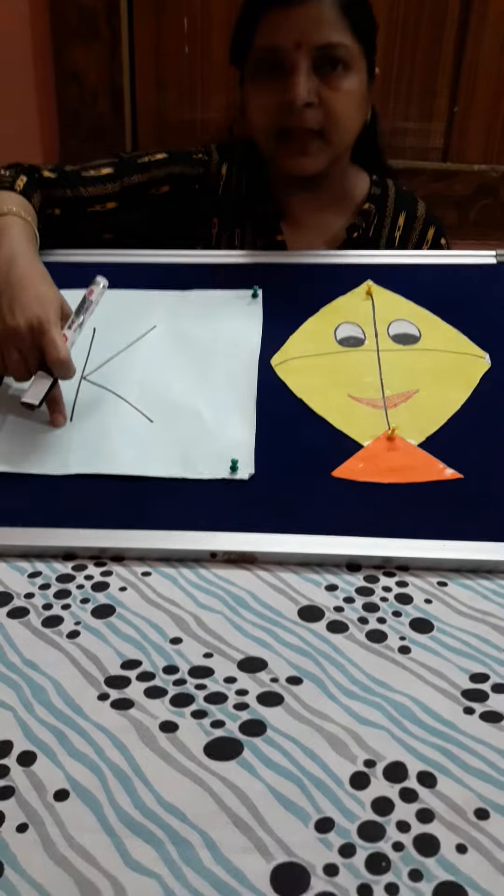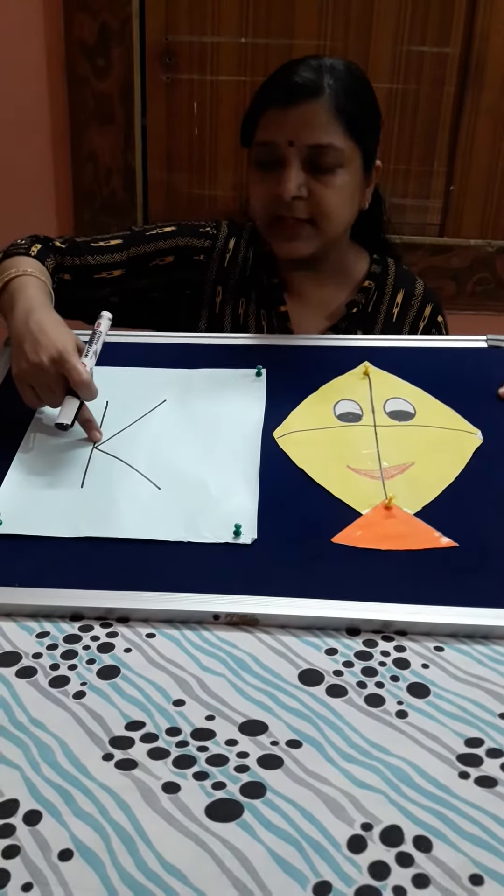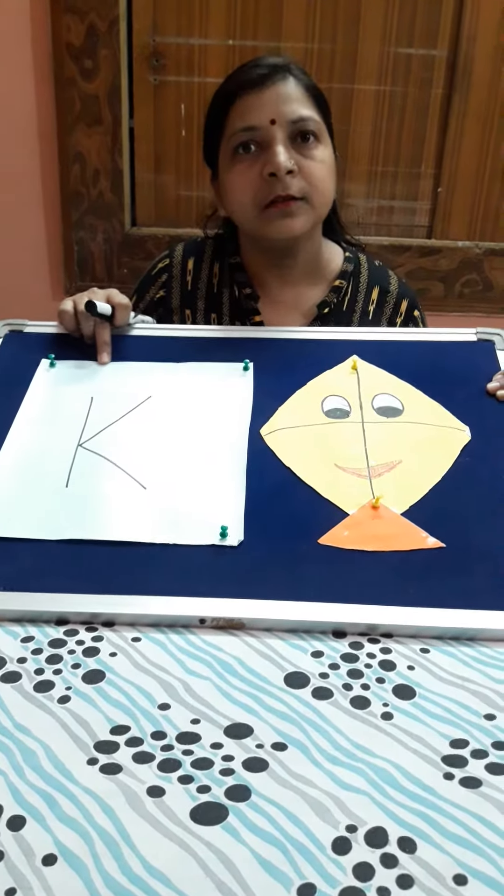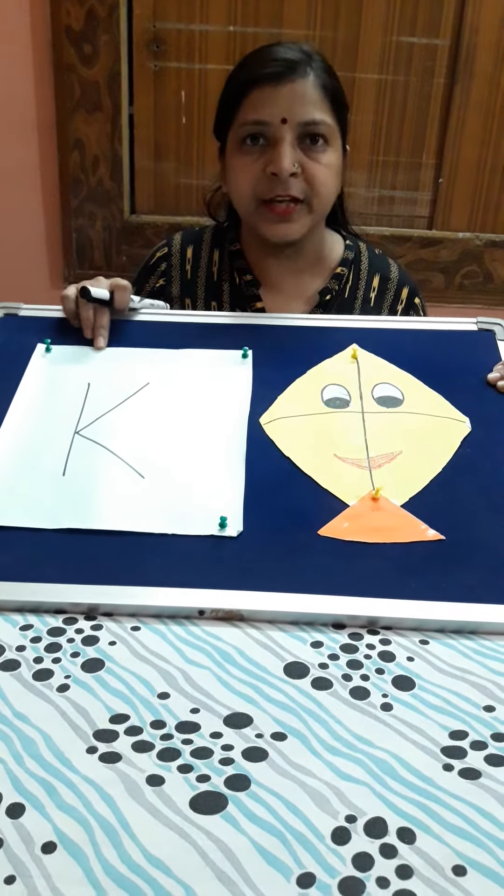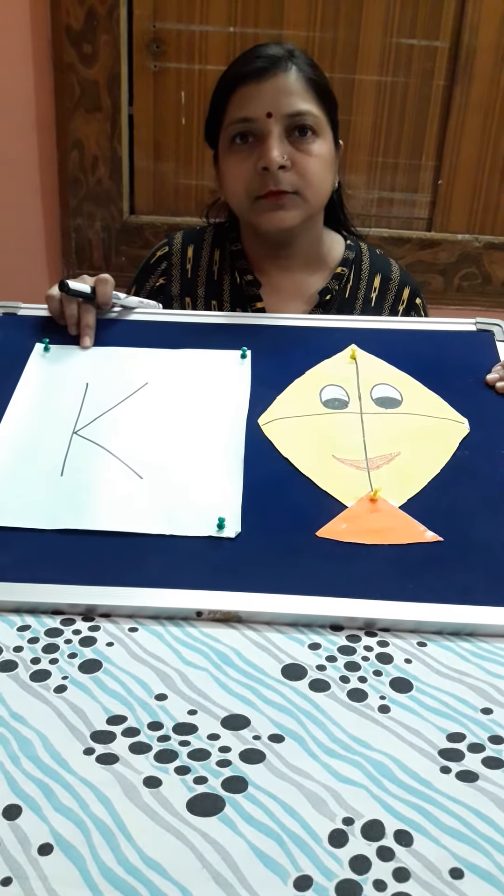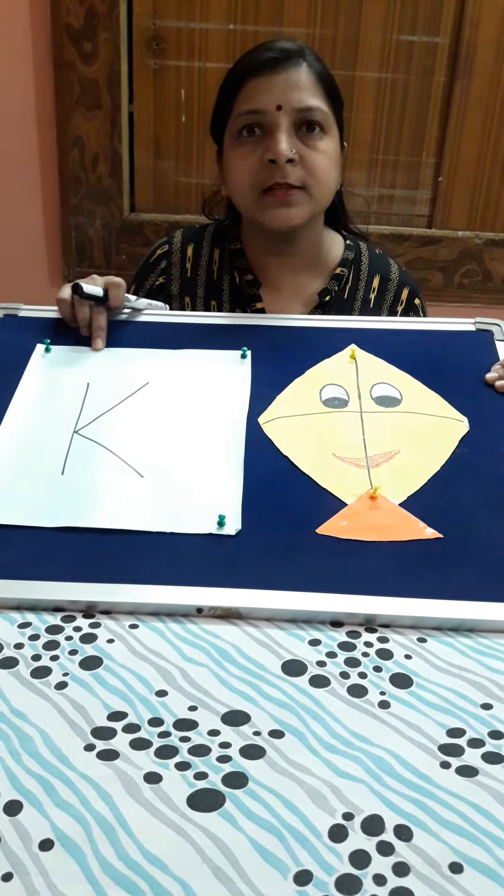One standing line and two slanting lines. Letter K. The sound of letter K is K.